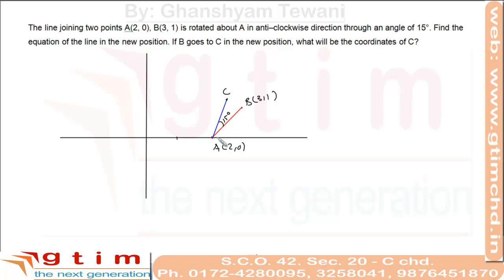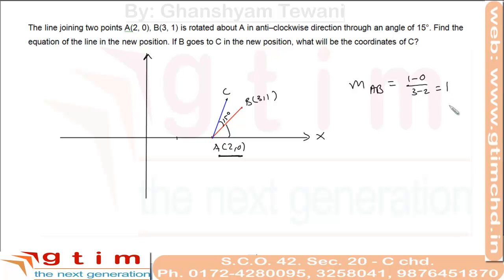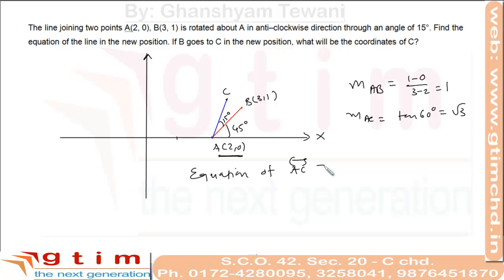To find the equation of line AC, we need a point — which is A(2, 0) — and the slope. For slope, we need the angle of line with positive x-axis. This angle includes the 15-degree rotation. We can get this angle from the slope of line AB. The slope of AB is (1 - 0)/(3 - 2) = 1, so this angle is 45 degrees. Then the angle of AC is 45 + 15 = 60 degrees, giving slope of AC = tan(60°) = √3. Hence the equation of line AC is y - 0 = √3(x - 2).